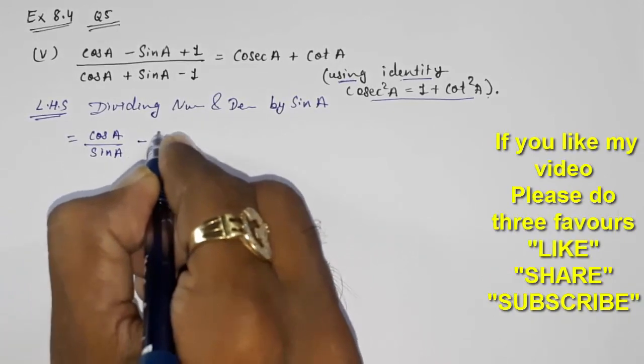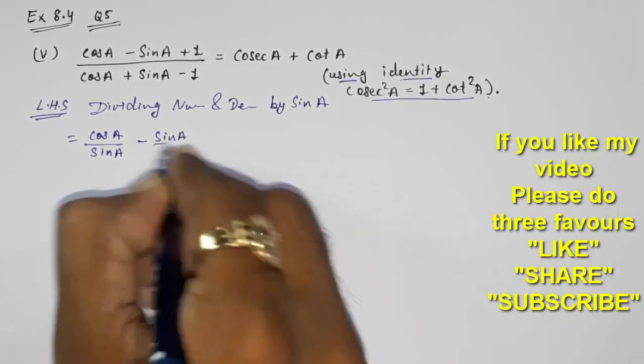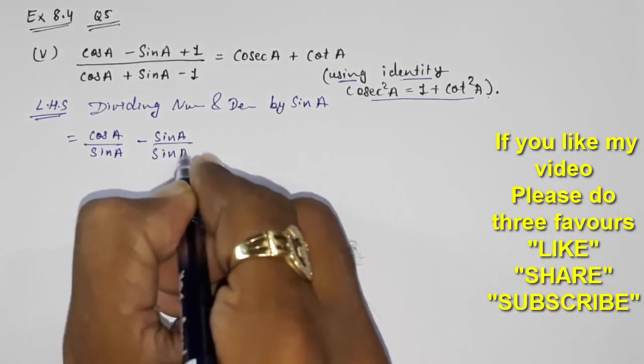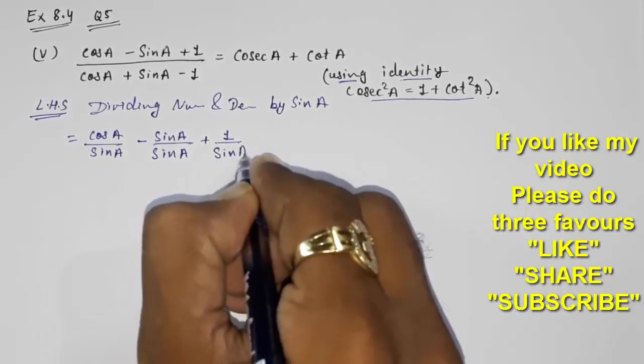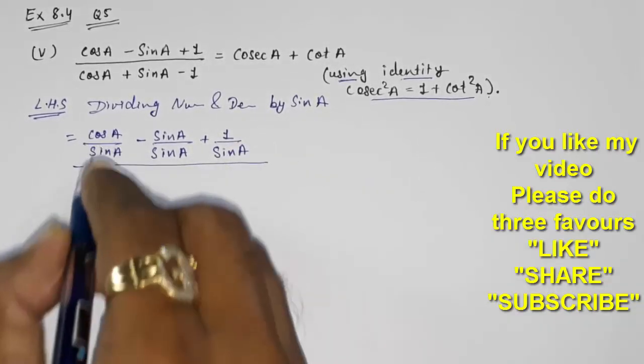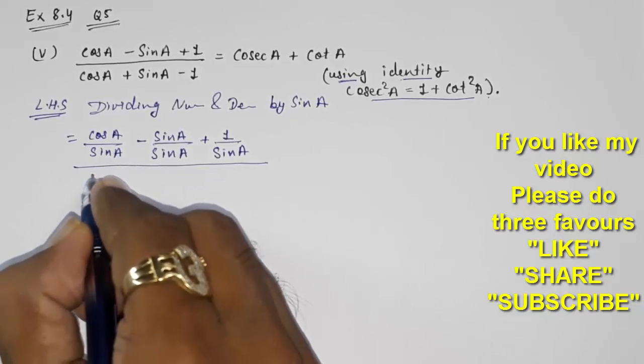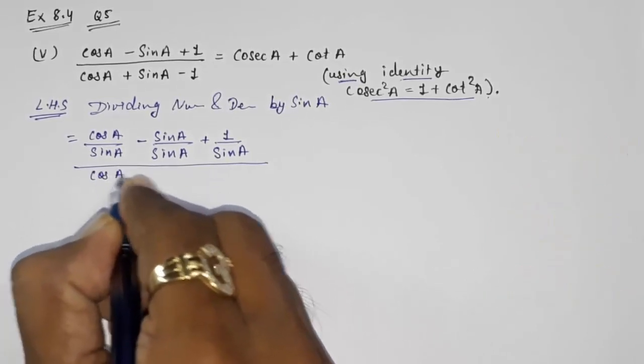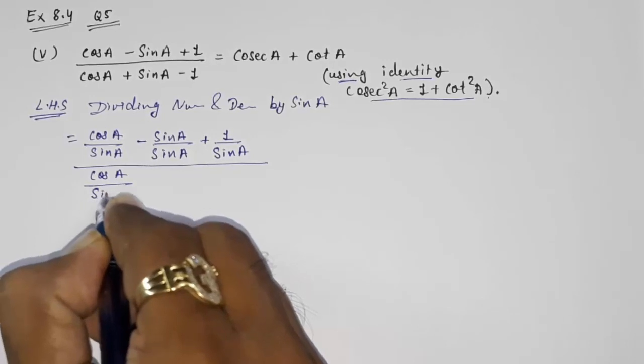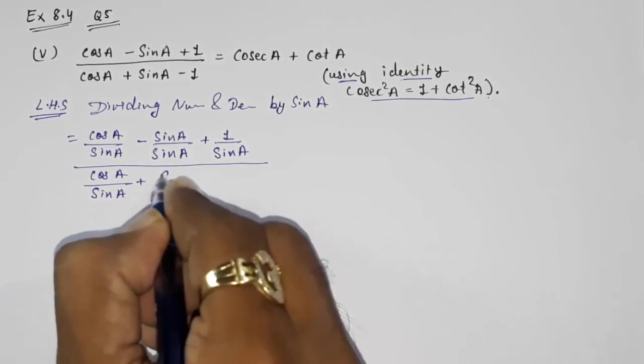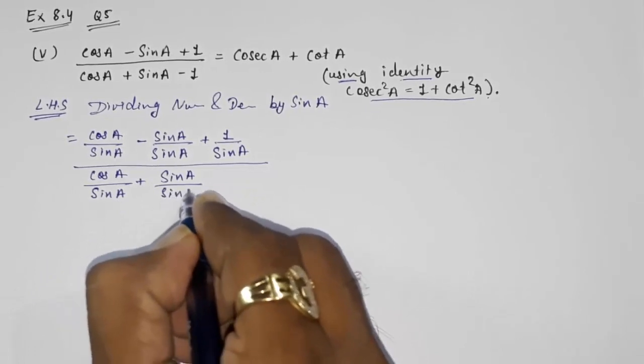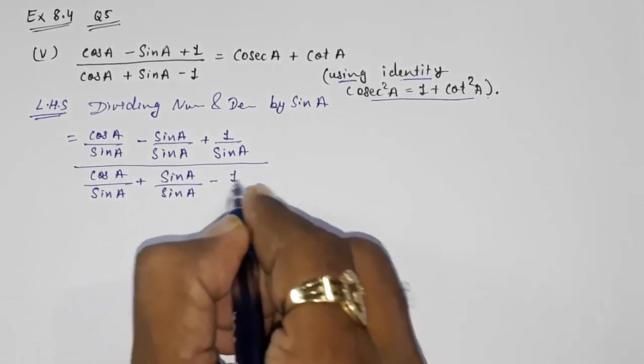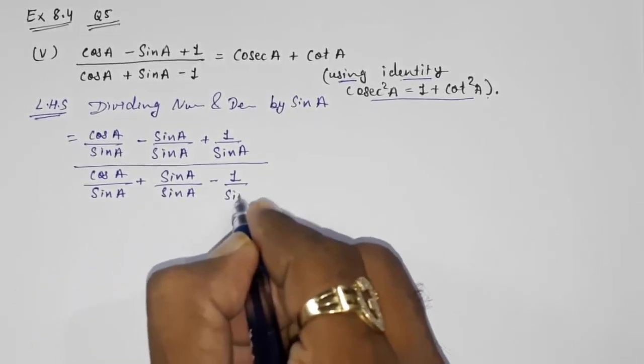Denominator part: cos A upon sin A plus sin A upon sin A minus 1 upon sin A.